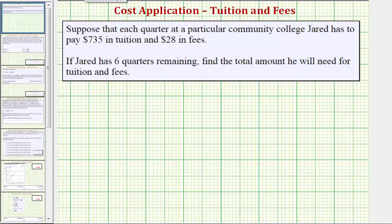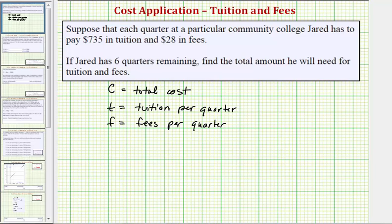Let's first define our variables. Let C be equal to the total cost. The total cost is dependent upon the tuition per quarter, the fees per quarter, and the number of quarters. So let T be equal to the tuition per quarter. Let F be equal to the fees per quarter. And finally we'll let Q be equal to the number of quarters.